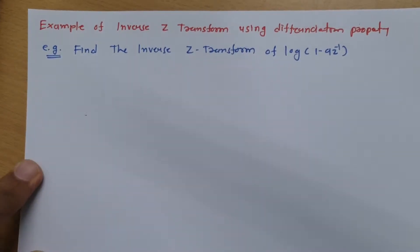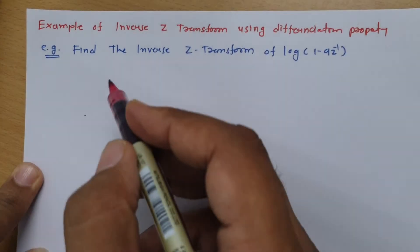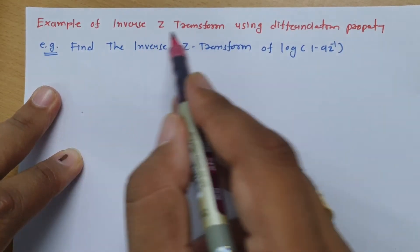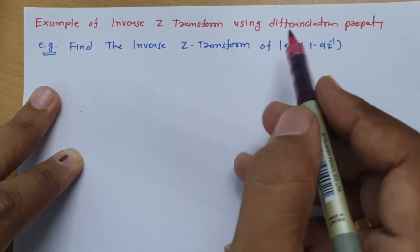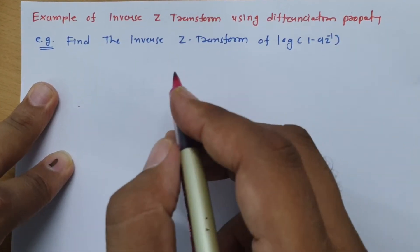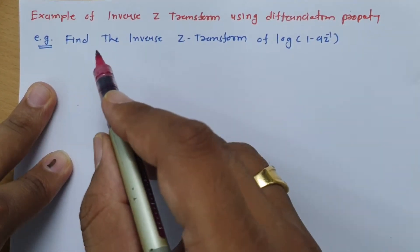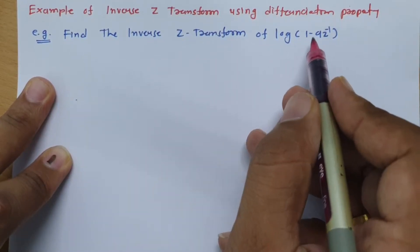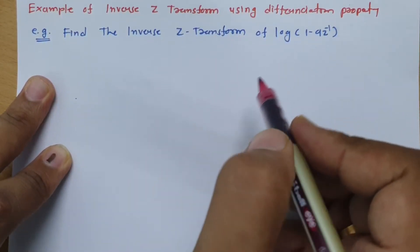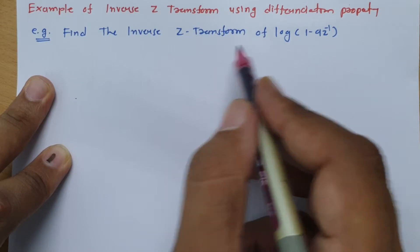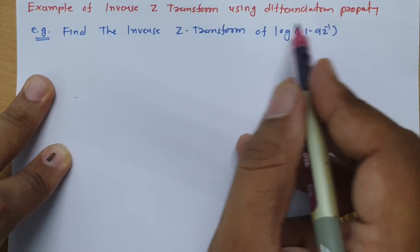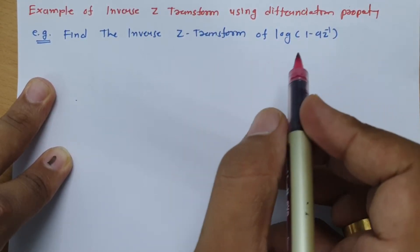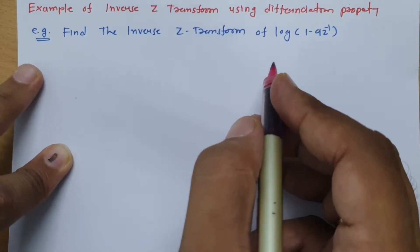Welcome to the signal and system lecture series. In this session, I will explain an example of inverse z-transform using the differentiation property. The question is: find the inverse z-transform of log(1 - az⁻¹). This is the z-transform given to us, and from this we need to identify the original signal.